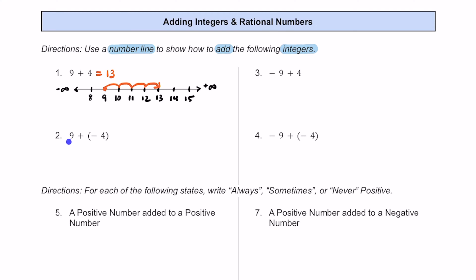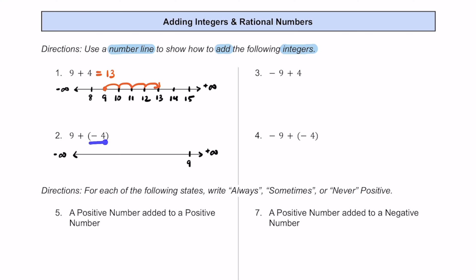For number 2, we have 9 plus negative 4. So it's similar, but instead of adding a positive 4, we're adding a negative 4. Start off by drawing a number line, with arrows because it goes in both directions forever. To the left is negative infinity, to the right is positive infinity. Just like number 1, we're starting with a 9, but we're adding a negative 4, so we're moving to the left.